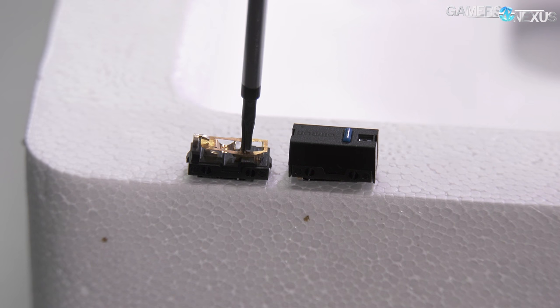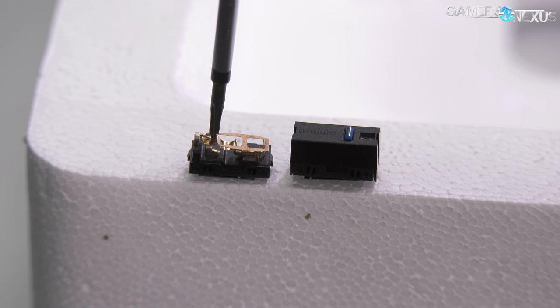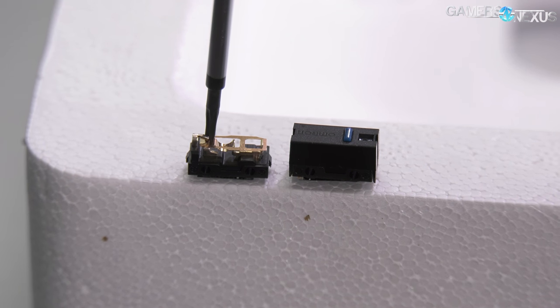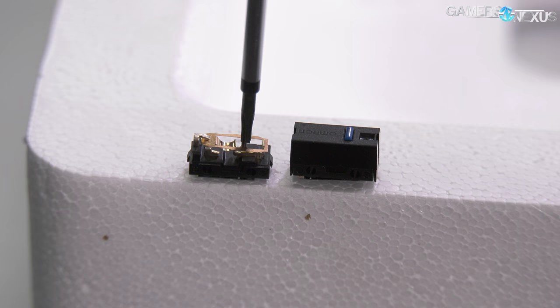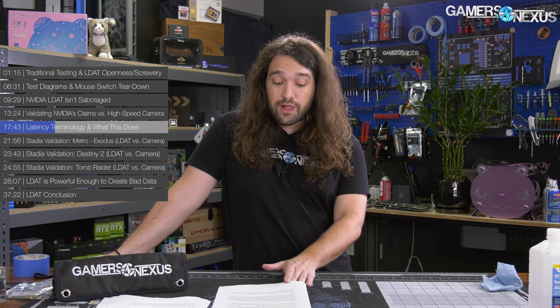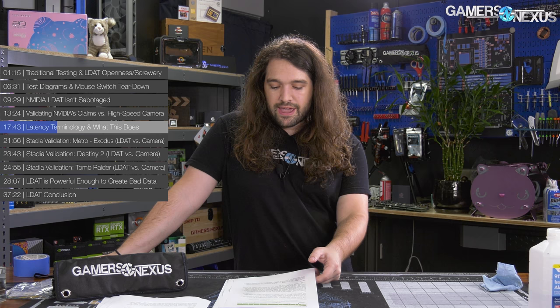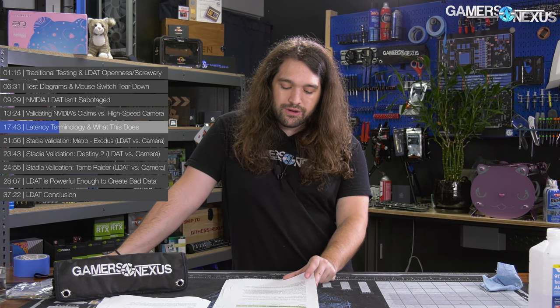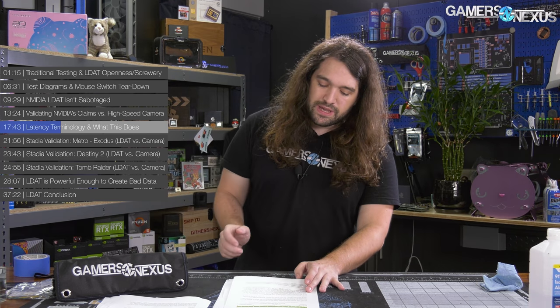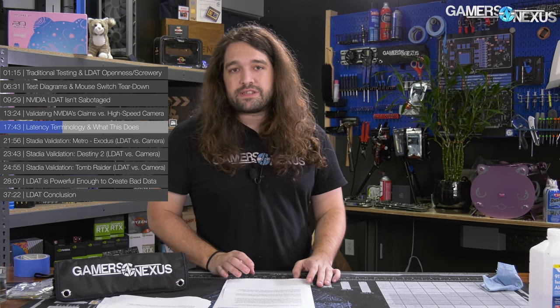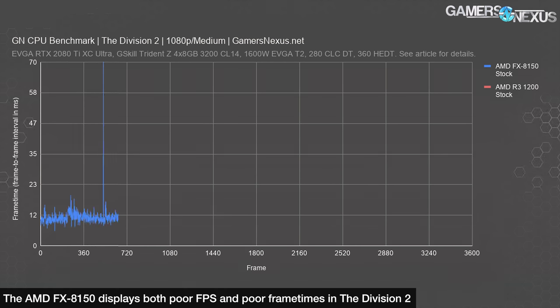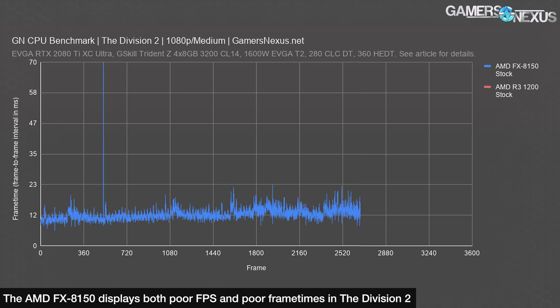Consistency is key. If we're comparing two GPUs, it matters less whether we use a fast mouse than if we use a mouse that contributes exactly the same amount of latency every single time and can thus be factored out of the equation. The mouse NVIDIA chose to include with LDAT is a Logitech G203 with a polling rate set to 1000 Hz, but we may choose to swap it out. The real goal is to get reliable components that produce known results and known overhead each time so you can extrapolate accurately, remove or isolate data as needed, and establish a baseline.